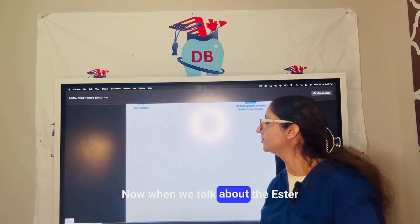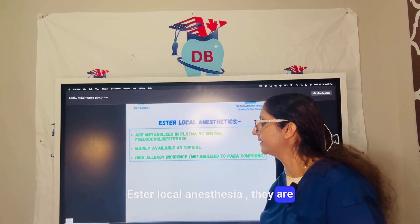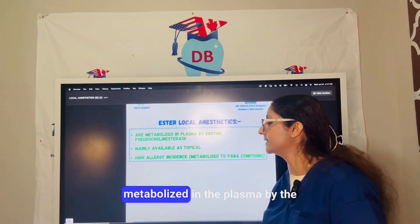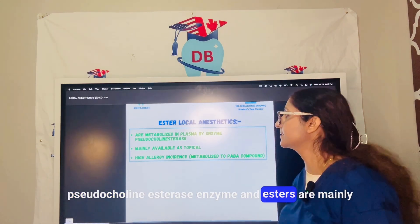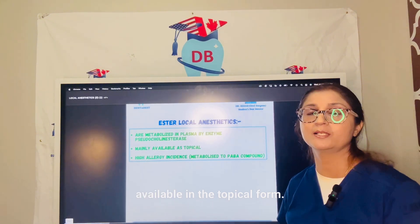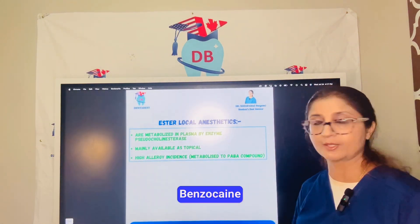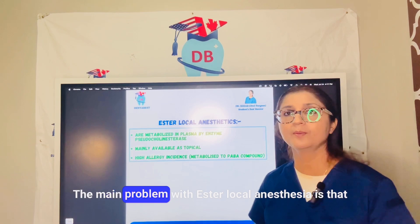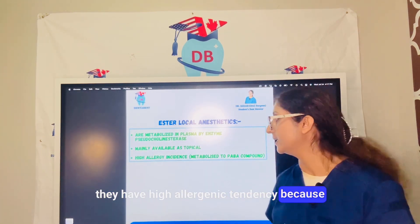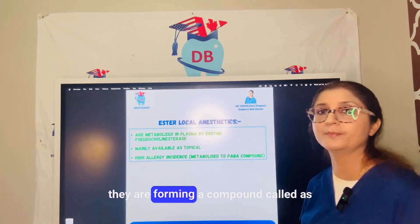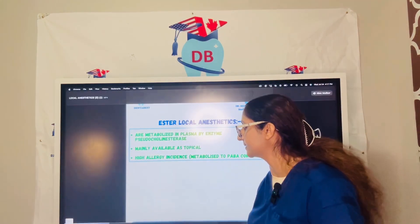When we talk about ester local anesthetics, they are metabolized in the plasma by the pseudocholinesterase enzyme, and esters are mainly available in topical form — for example, a topical spray of benzocaine. The main problem with ester local anesthetics is that they have a high allergenic tendency because they form a compound called PABA, or para-aminobenzoic acid.